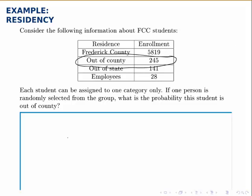The probability is the number of ways that could happen. So 245 is the number of people we could select in that category, divided by the total number of people there are. If we add up 5819, 245, 141, and 28, we get a total of 6233. So that's the probability — the number of ways of selecting an out-of-county student divided by the number of ways of selecting any student.